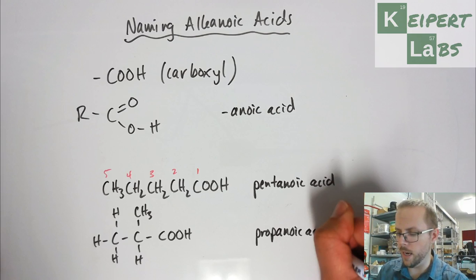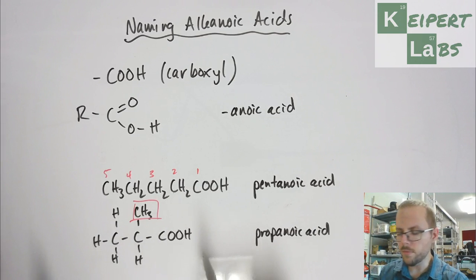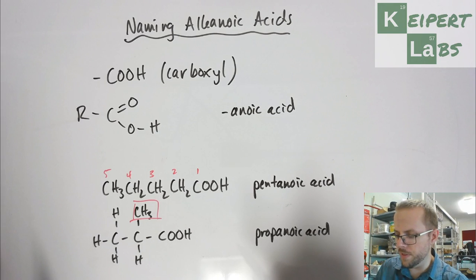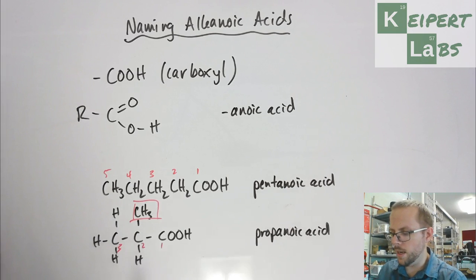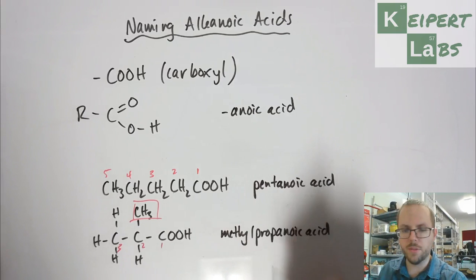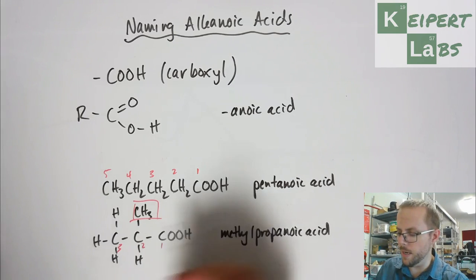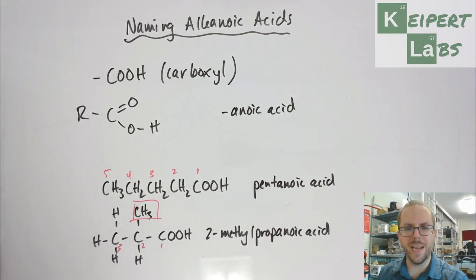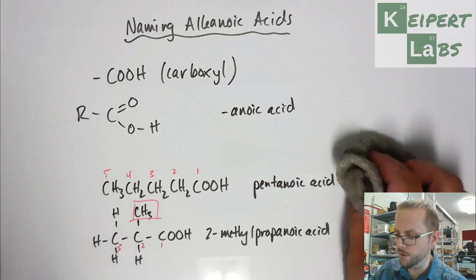I'm going to number from this end: one, two, three. I know that if I've got a carbon group with one carbon, it's a methyl group. And it's on carbon number two. So it's 2-methyl propanoic acid. We've built from the same kind of base. Using our numbering, we've been able to name our branch, and we've put the number in there—our locant—to tell us where it is.